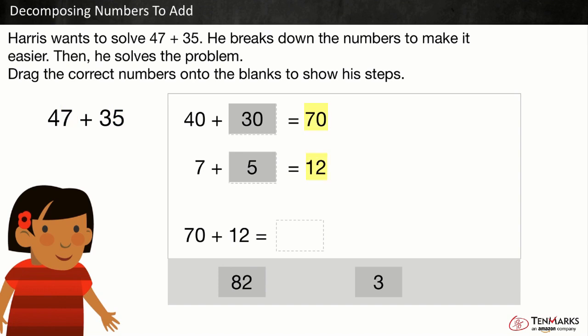Let's add the tens and ones. 70 plus 12 is equal to 82. In this lesson you learned to decompose numbers to add.